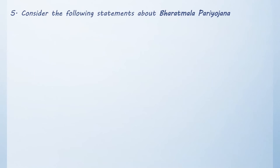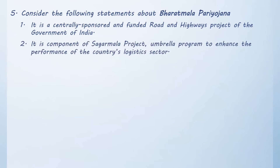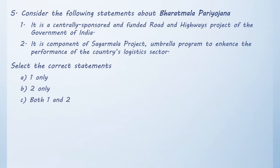Moving on: consider the following statements about Bharat Mala Pariyojana. Statement 1: It is a centrally sponsored and funded road and highway project of the Government of India. Statement 2: It is a component of the Sagarmala project umbrella program to enhance the performance of the country's logistics sector. Select the correct statements. Option A: 1 only. Option B: 2 only. Option C: Both 1 and 2. Option D: Neither 1 nor 2. The correct answer is Option A, one only.